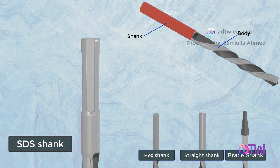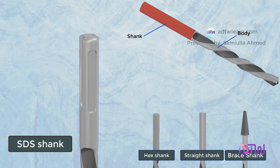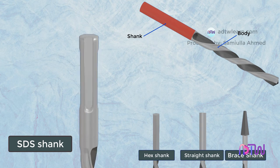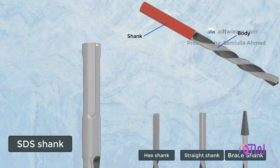SDS shank: this type of shank can directly fit into a spring-loaded chuck and does not require tightening. It can simply be pushed into the chuck. It is especially suitable for hammer drilling with a masonry drill in stone and concrete.